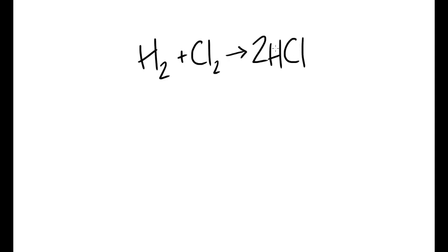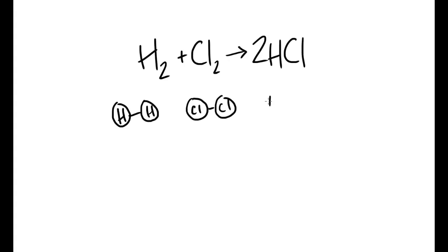In this video we're going to look at how you can take a reaction and use some data given to you in an exam to calculate the energy change for that reaction based on the bonds and the molecules that are reacting. We'll base this around the reaction between hydrogen and chlorine to make hydrogen chloride. One mole of hydrogen gas reacts with one mole of chlorine gas to produce two moles of hydrogen chloride gas.